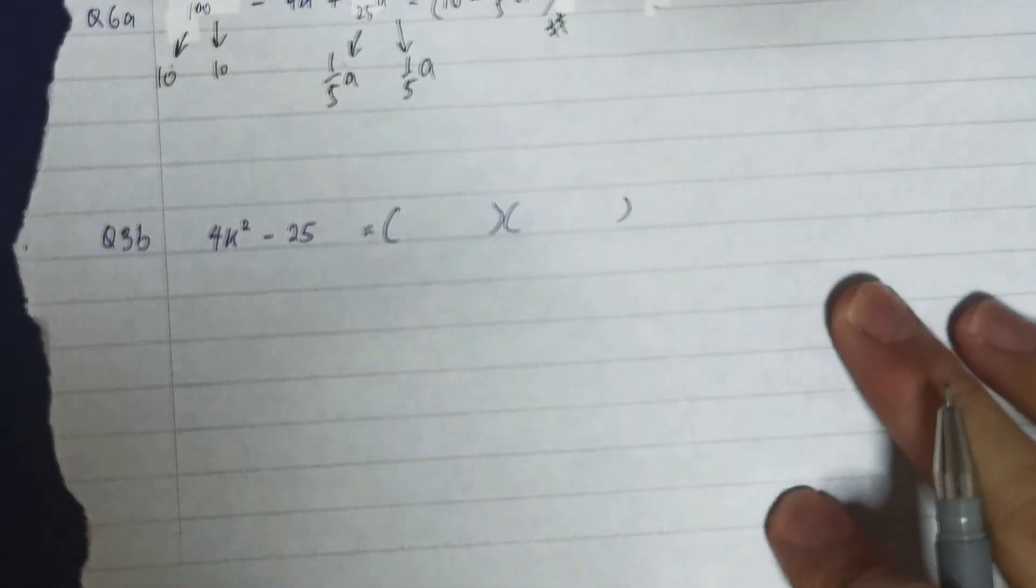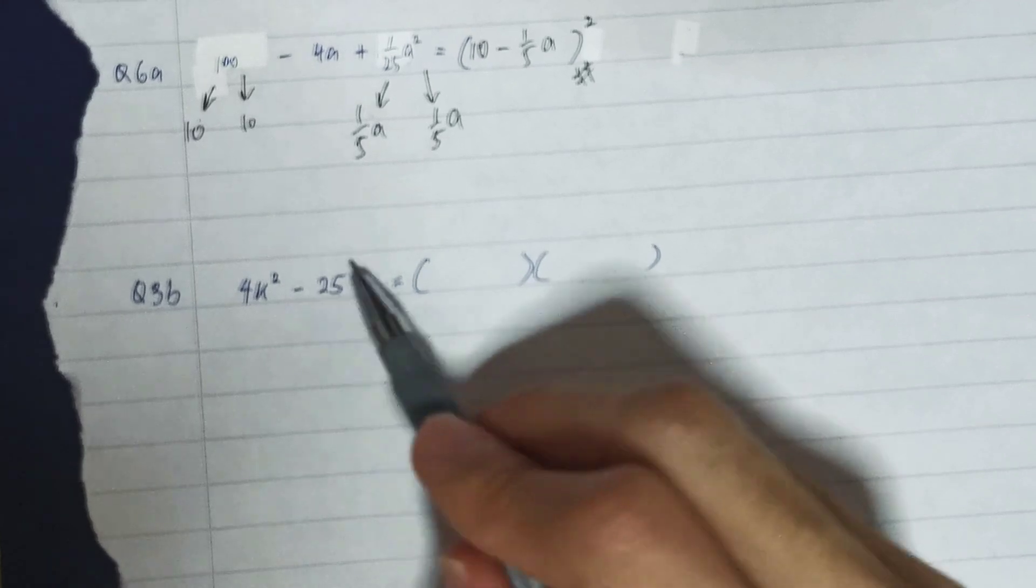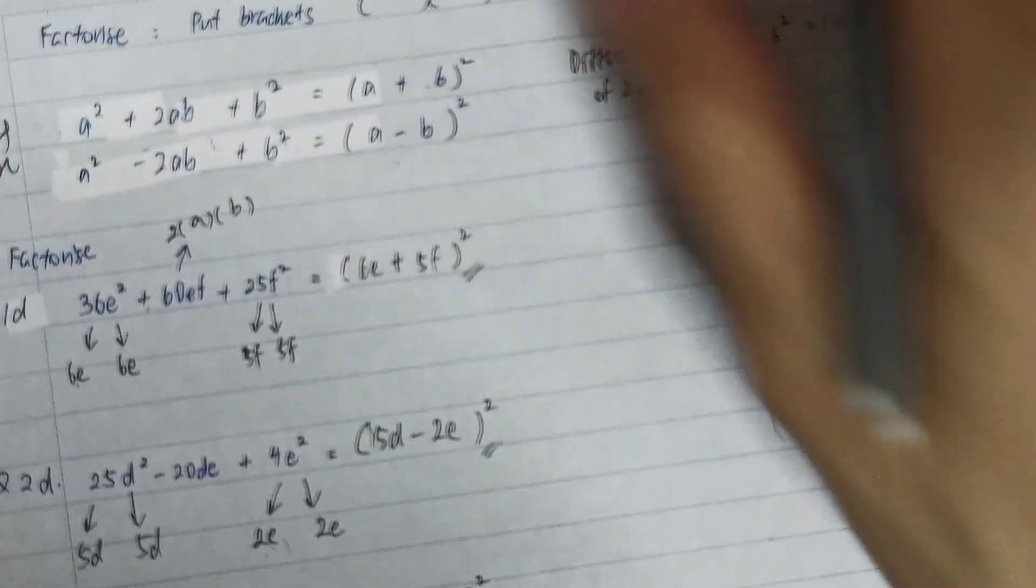Now looking at the last question. So this last question, now you see a², but there's only one number at the back. So normally this form, you will come to mind immediately that this one must be the difference of two squares.